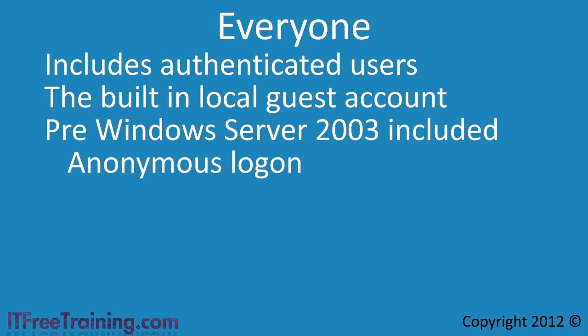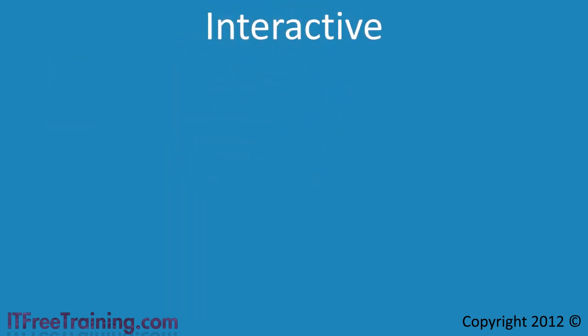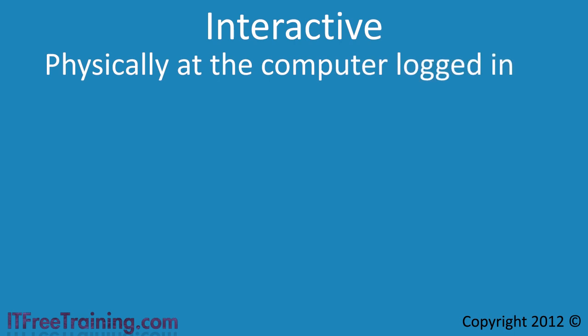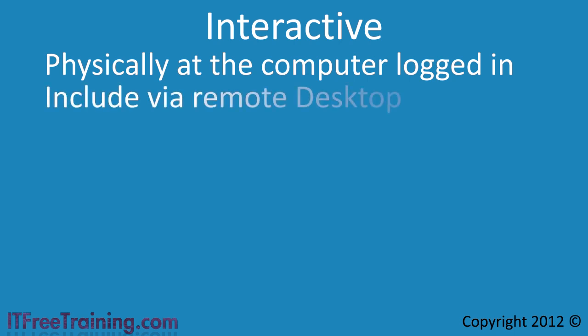So far the special identities looked at have all worked off the way the user was authenticated. The next one is interactive. Interactive is when the user is physically in front of the computer and logged in using any user account that allows them to login. It does not matter which domain it came from or which rights it has. As long as the account has enough rights to log on to the computer, it will be classified as interactive. Interactive also includes connections established using remote desktop, since remote desktop gives the user much the same desktop control as if they were in front of the computer.